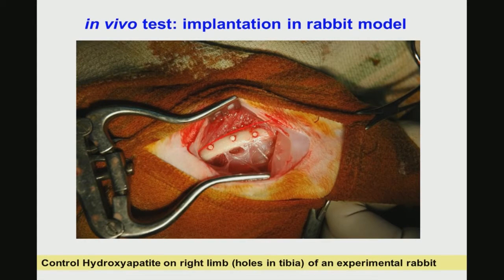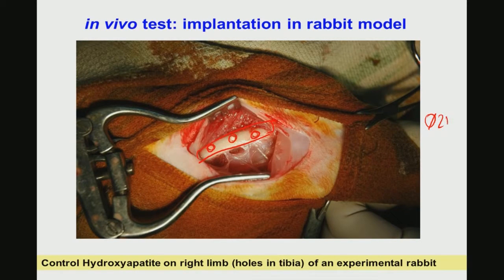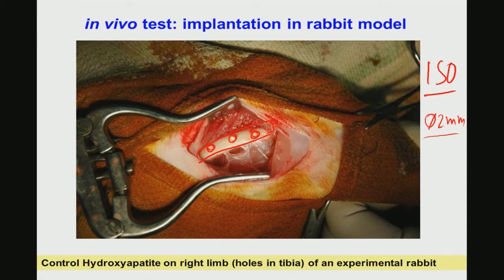What you see here is the femur of a rabbit, with three evenly spaced holes drilled using a precision ultramicrotome. As per ISO standard, a 2 mm diameter hole is drilled, and the cylindrical rod made of the glass ceramic material — typically 5 to 6 mm in length — is closely fitted into the femoral defect. After the implant is placed, the wound is stitched and closed.